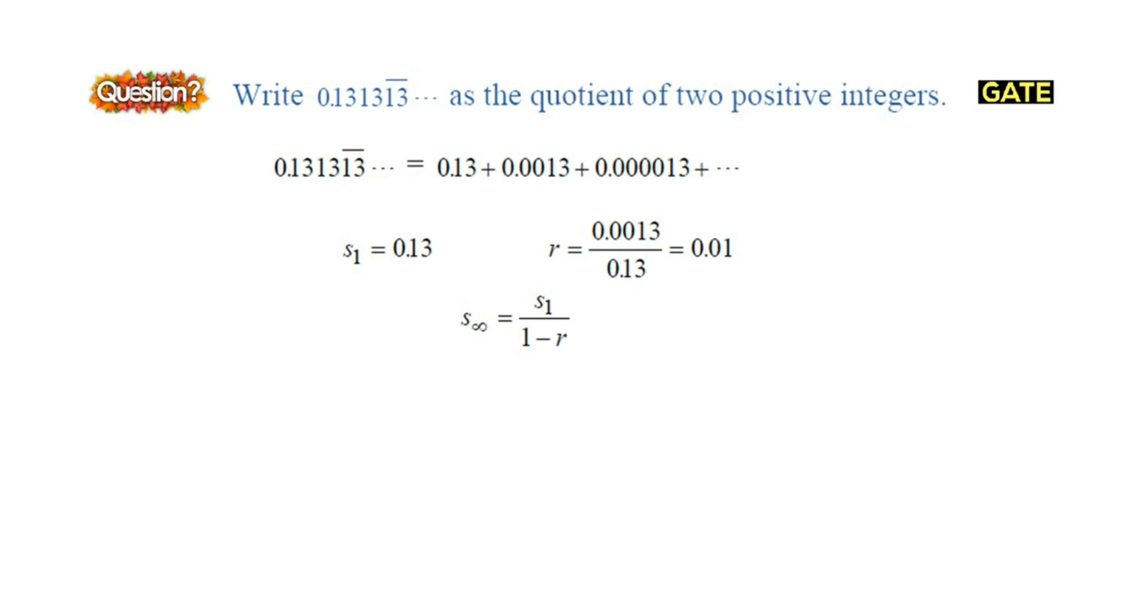Substituting the values, that equals 0.13 divided by 0.99.